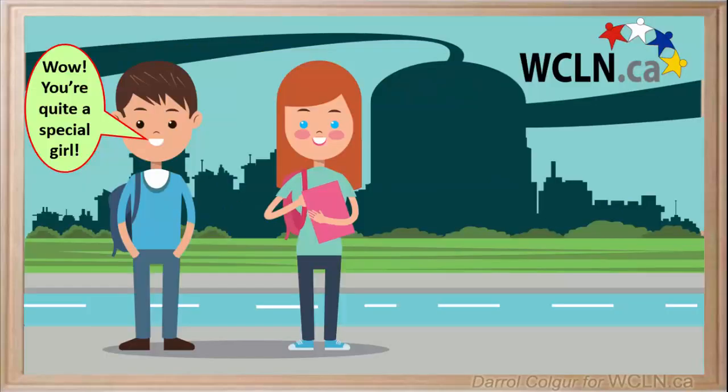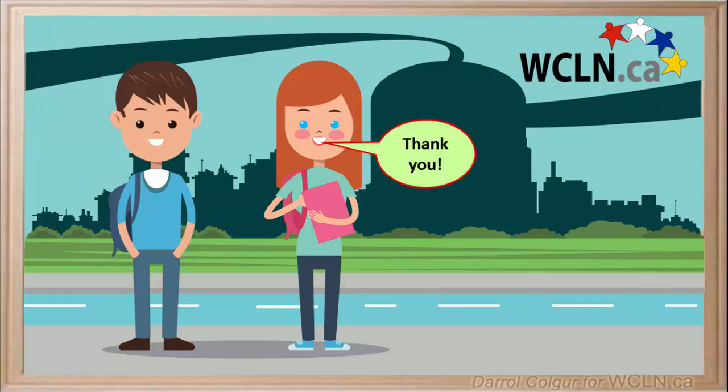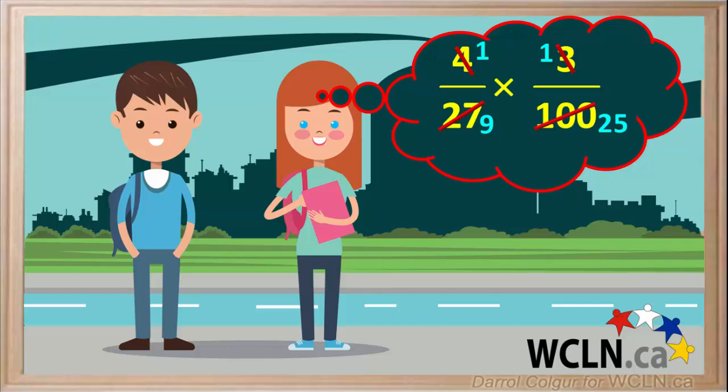Having both red hair and blue eyes is actually quite rare in the human population. It's great that we can cancel and simplify diagonal numbers in fractions before multiplying them. It makes multiplication of fractions a lot simpler.